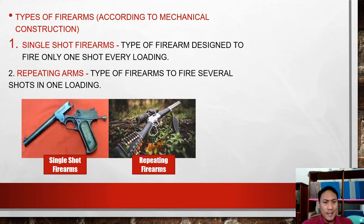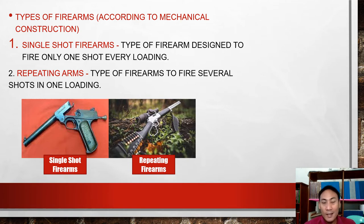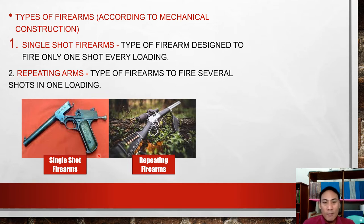Types of firearms according to mechanical construction. First is the single shot firearm — a type of firearm designed to fire only one shot every loading. One load, one shot; remove the cartridge, reload again. Next is repeating arms — a type of firearm that fires several shots in one loading. You load it, fire multiple shots, then reload.